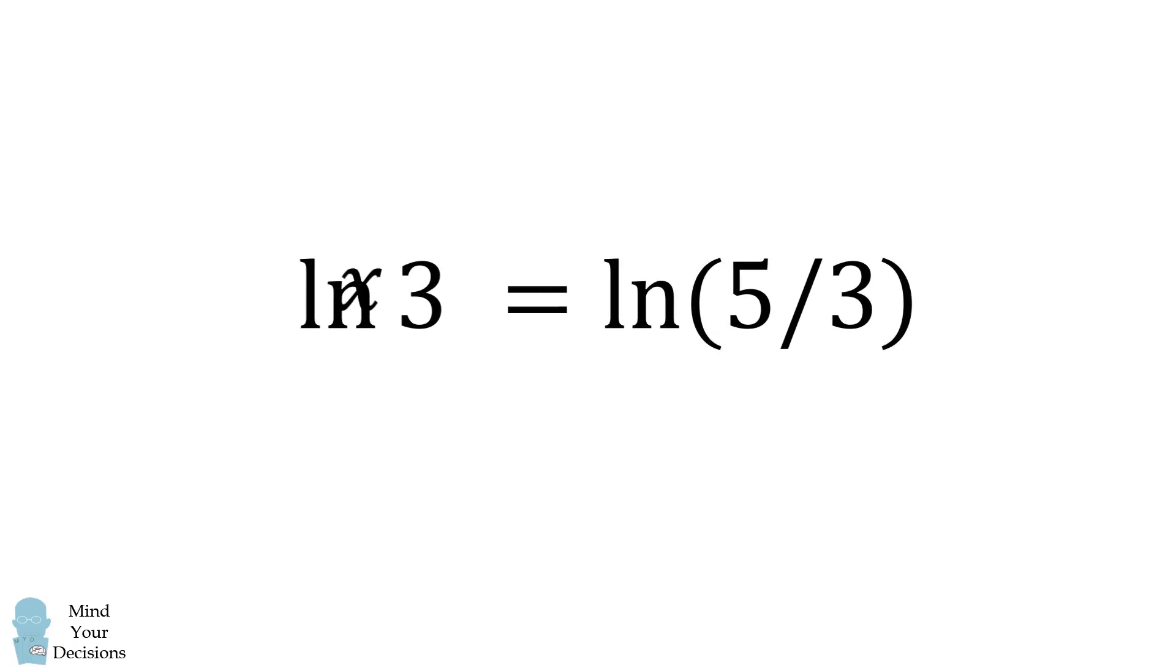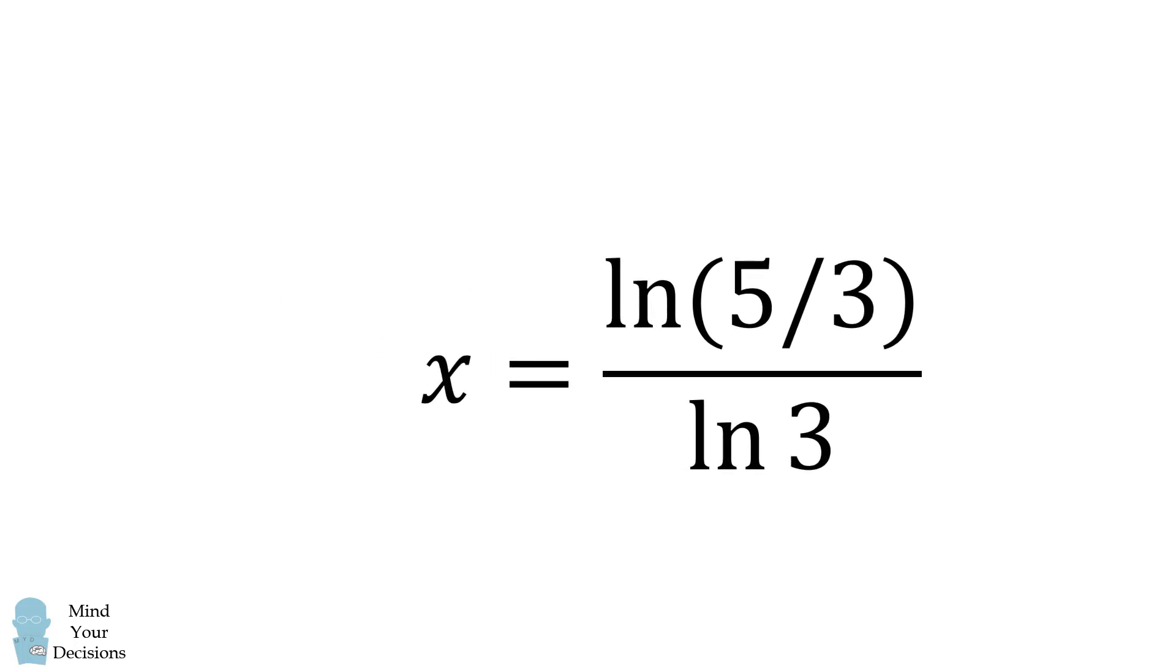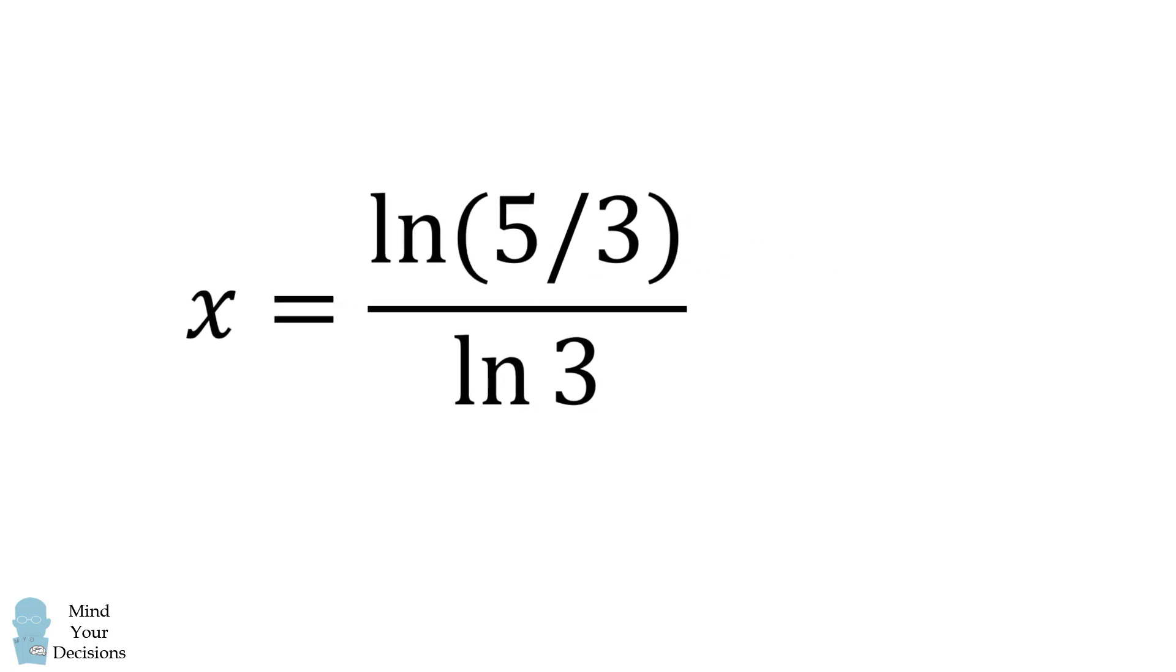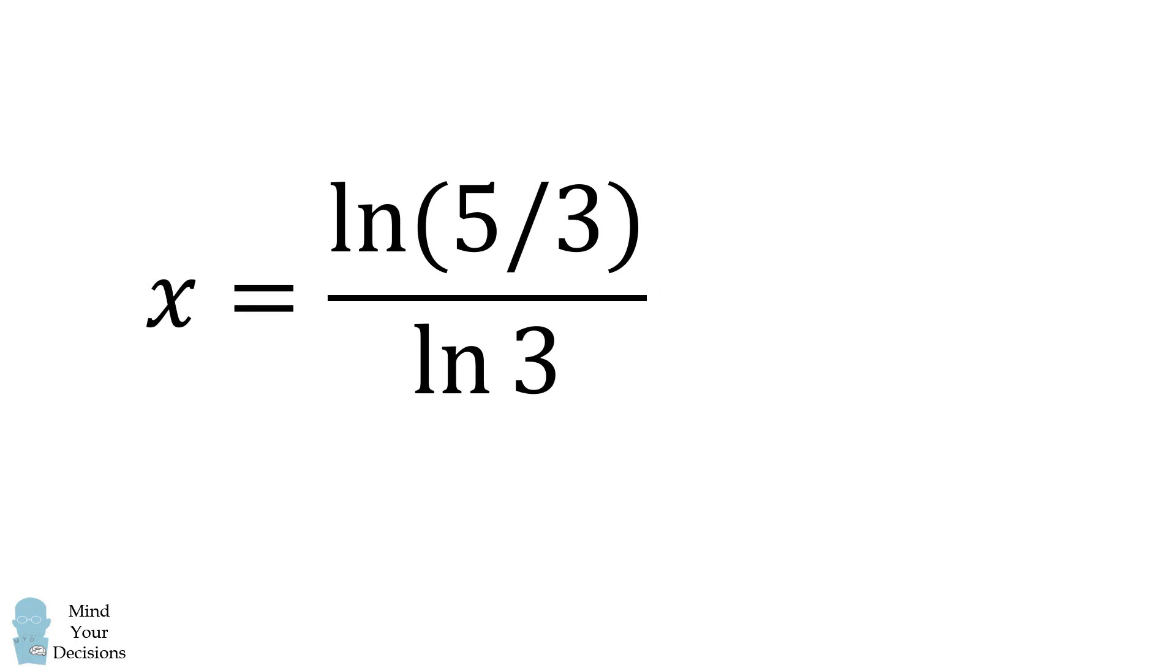The x will come out to the front. We will then divide both sides of the equation by the natural log of 3. Thus x is equal to the natural log of 5 over 3, all over the natural log of 3. And that's approximately equal to 0.465.